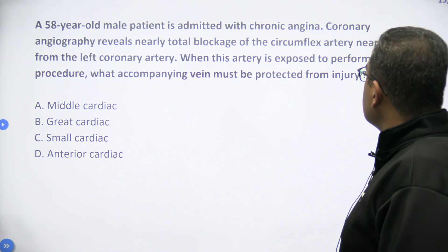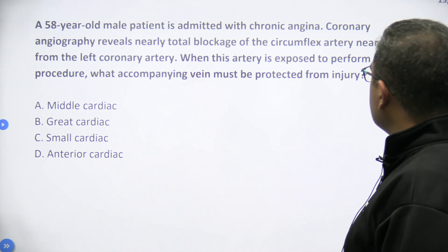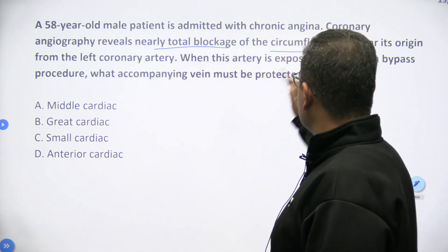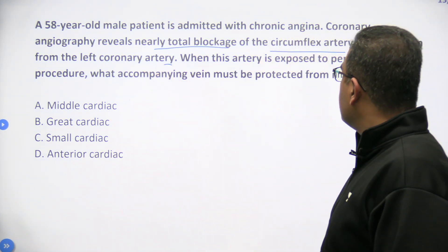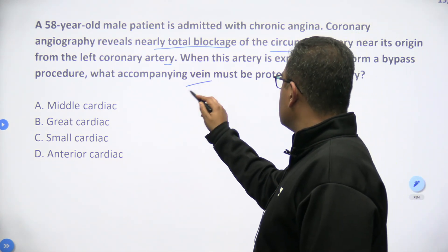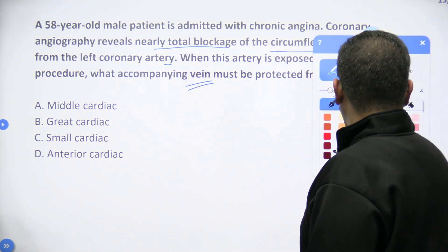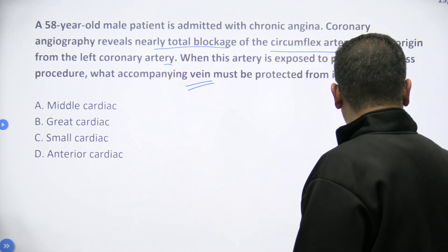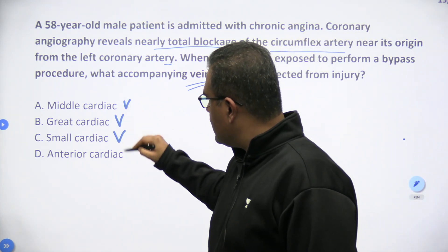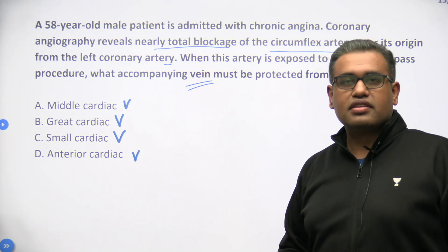A 55-year-old male is admitted with chronic angina. Coronary angiography reveals nearly total blockage of the circumflex artery near its origin from the LCA. When this artery is exposed to perform a bypass, what accompanying vein must be protected from injury? The options are: middle cardiac, great cardiac, small cardiac, and anterior cardiac veins.